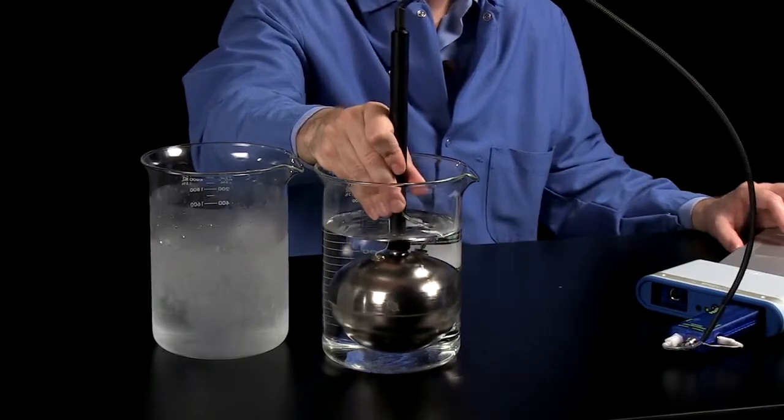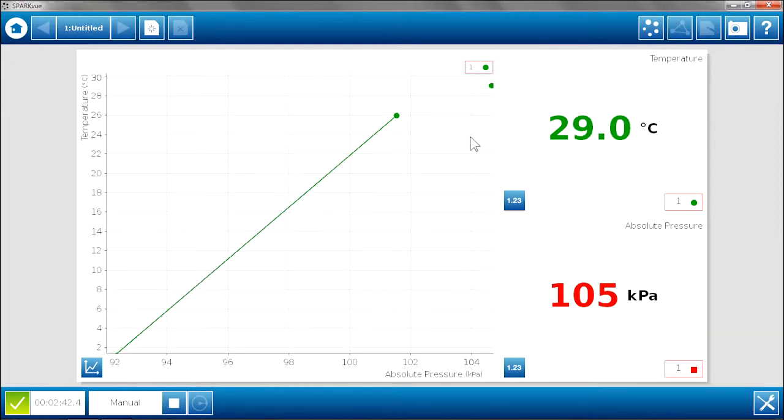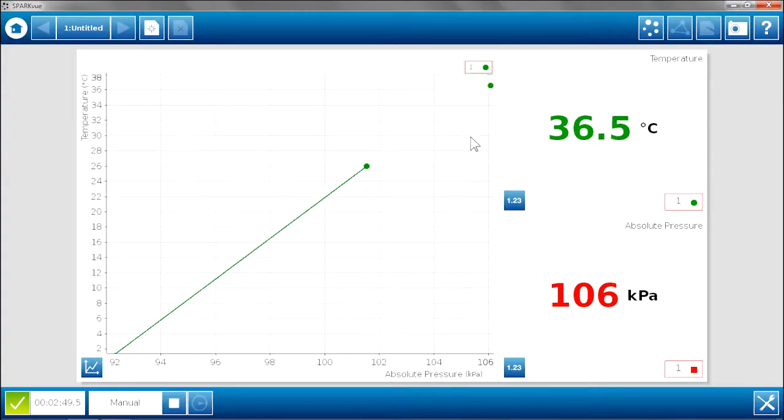Now I am going to put this into the warm bath. Again, I want to make sure this is completely submerged. We can see the point on the graph rapidly rising as the temperature and pressure inside the sphere attempt to equilibrate with the warm water. So once again we will give this a little bit of time as the temperature and pressure equilibrate. We will fast forward the video.